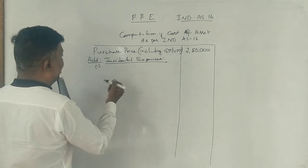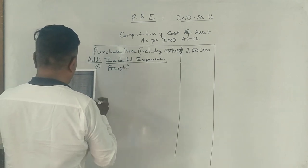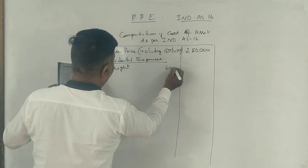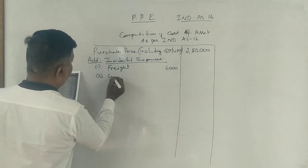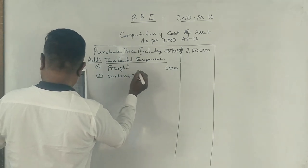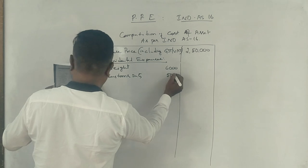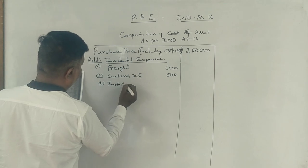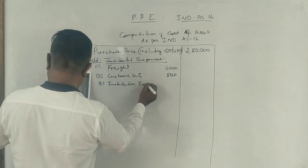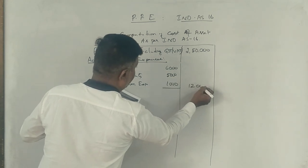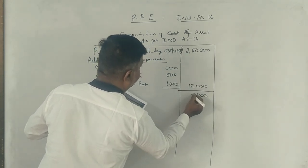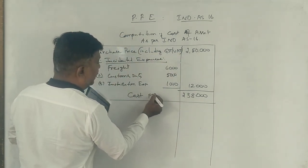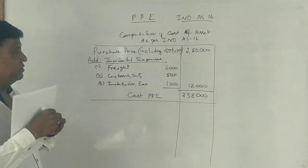But what the incidental charges are: freight is Rs. 6,000, customs duty is Rs. 5,000, and installation expenses Rs. 1,000 — so total Rs. 12,000. Thus the cost of PPE is Rs. 2,88,000.